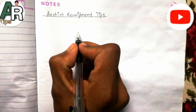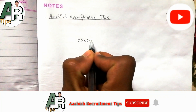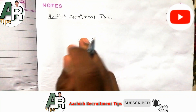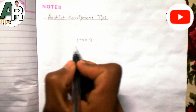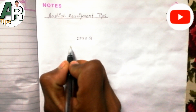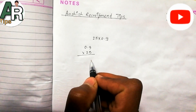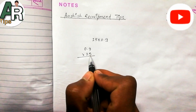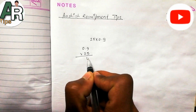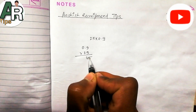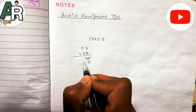Here I am going to show you what I am going to show you. I am going to show you 25 times 0.9. Normally, I am going to show you how to use this calculator. So here we go. Here I am going to show you the calculator. I am going to show you how to use the calculator — 18.